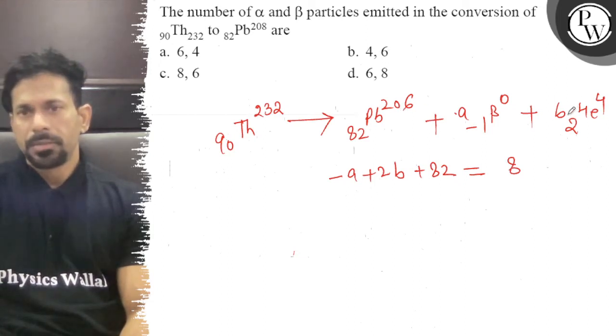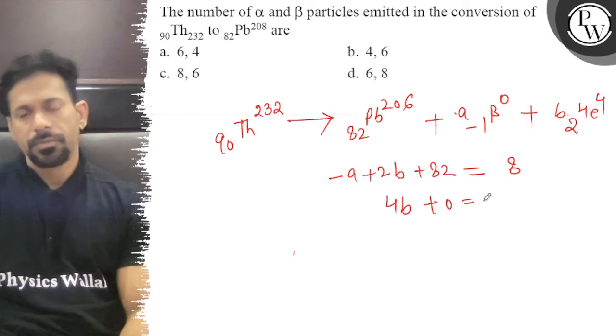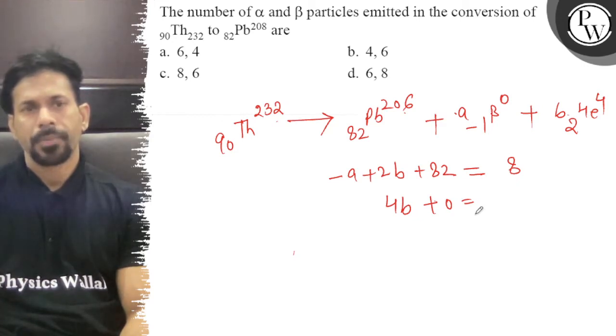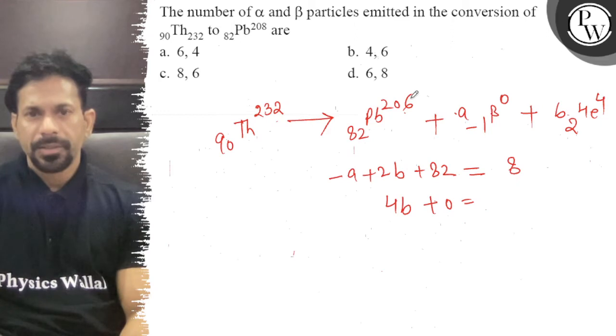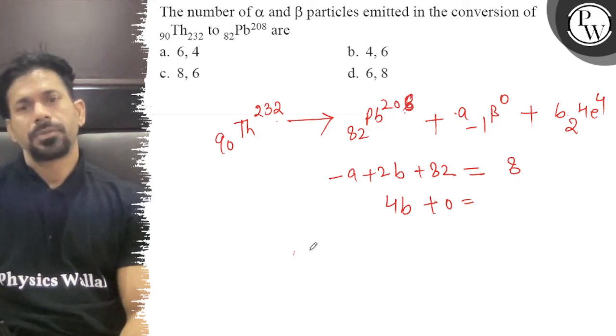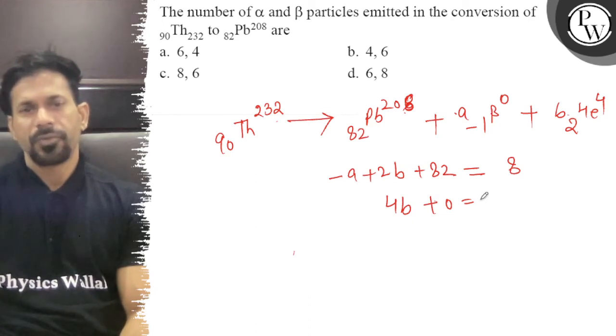That is 8. Or upar ho jayega 4b plus 0 is equal to 232 minus 206, which is 26. Sorry, 208 hai. So yeh 208, 24 ho jayega.